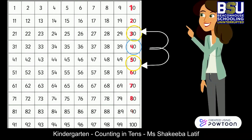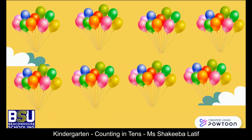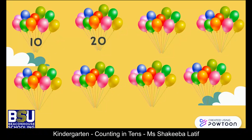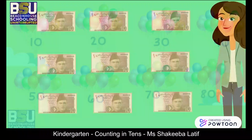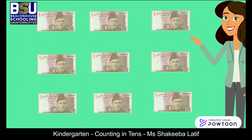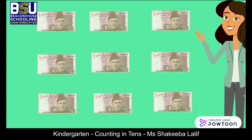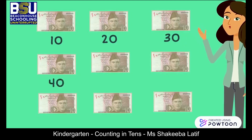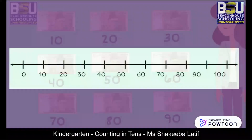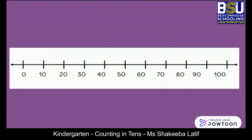Here are a few bunches of balloons with 10 balloons in each bunch. If we skip count by 10, we have 10, 20, 30, 40, 50, 60, 70, 80 — 80 balloons in total. Counting 10-rupee notes is easy using counting in tens: 10, 20, 30, 40, 50, 60, 70, 80, 90 — 90 rupees in total.